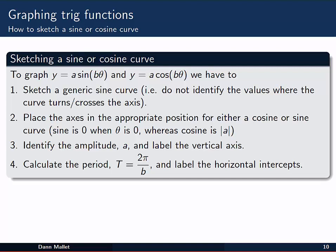Let's look at sketching one of these ourselves. Say we wanted to graph y equal to a sine b theta or y equal to a cos b theta. First of all, the way I always set these up is to just draw a generic sine curve. I don't identify any of the values anywhere or where it crosses the axis. In other words, I just draw a sine curve, something like this. Then we can place the axes in the appropriate position for either a cos or a sine curve. Draw the horizontal axis, so we can just slot that straight through the middle. We're using theta here, so we'll call that the theta axis.